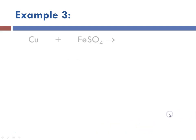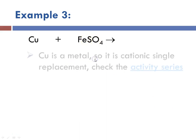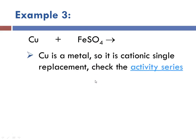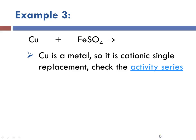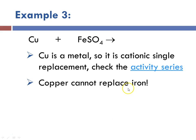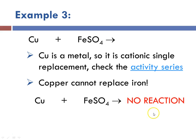Example 3: copper is a metal, so it's cationic single replacement. Copper is trying to kick out iron. We consult the activity series — copper is below iron, so copper cannot replace iron. Therefore, we write no reaction.